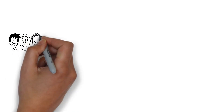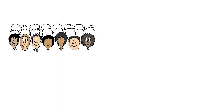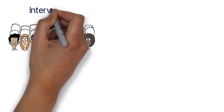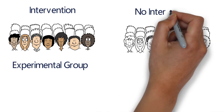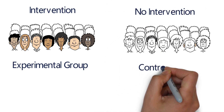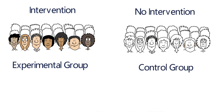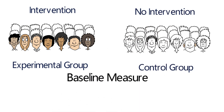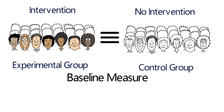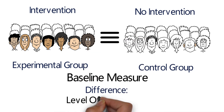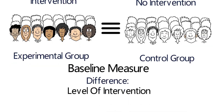One group is randomly assigned to receive an intervention — the experimental group. The other group has no intervention, called the control group, and provides the baseline measure. Each group should be statistically identical in every way, the only difference being the level of intervention they receive.